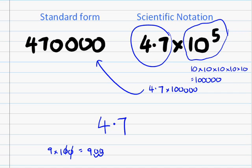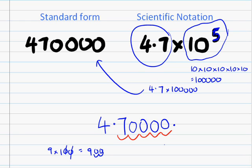Here, you have to move the decimal place 5 times. So the decimal place moves 1, 2, 3, 4, 5 times. I just put zeros in, so the decimal place ends up here. Getting rid of the trailing decimal, the answer is 470,000. Pretty easy.